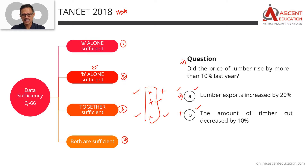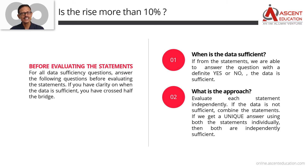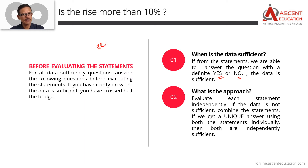The question is: Did the price of lumber rise by more than 10% last year? Any question that starts with 'Did', 'Is', or 'Was' is a B-verb question. The answer to such a question will be either yes — the price increased by more than 10% — or no — it did not.